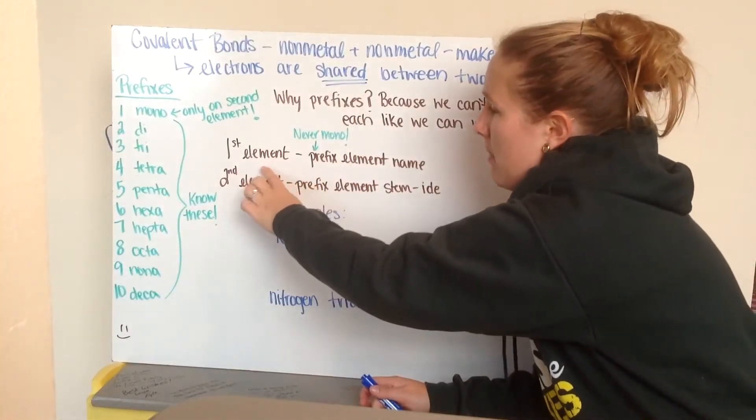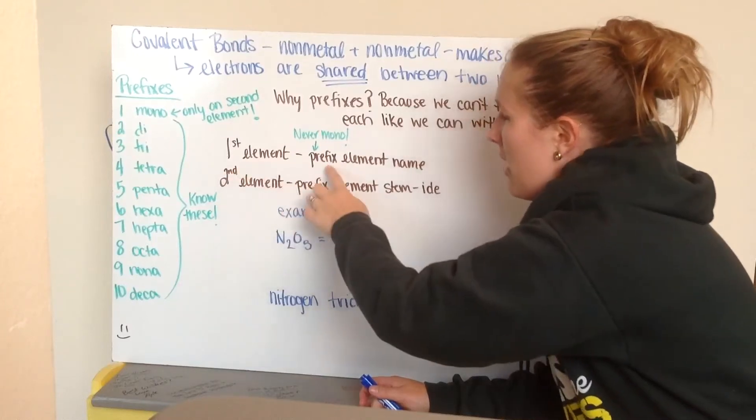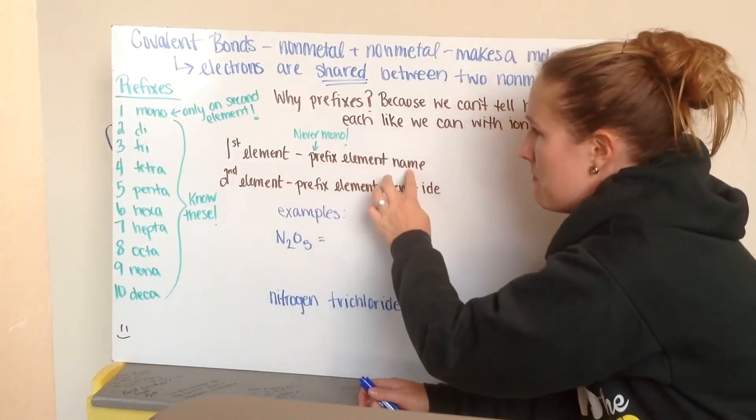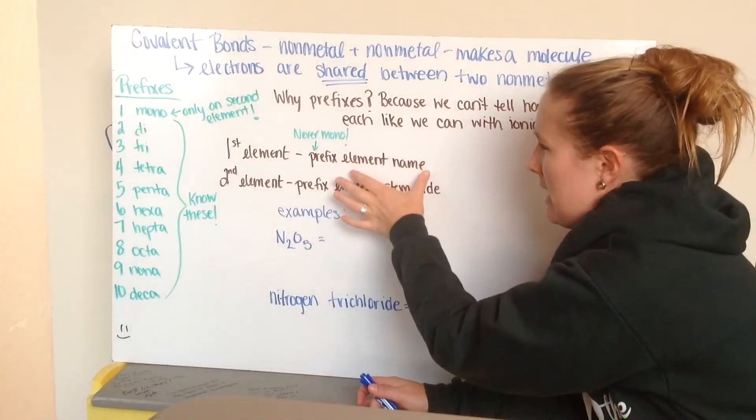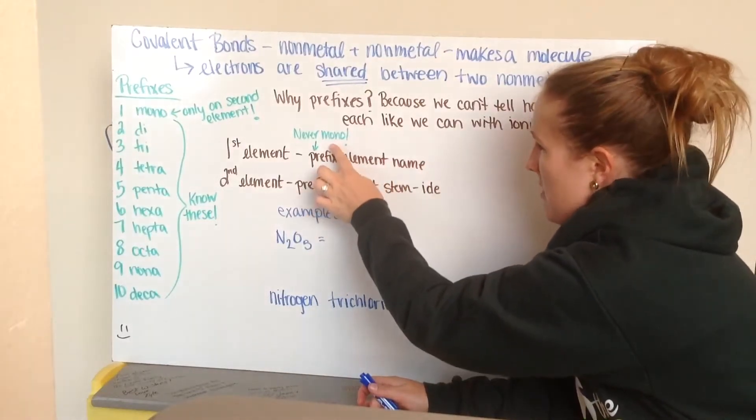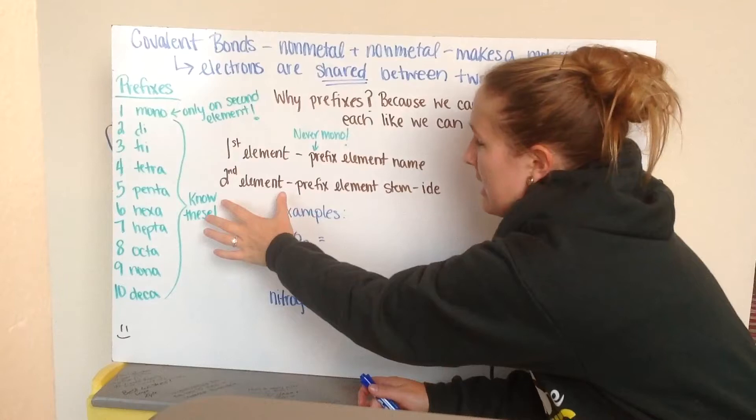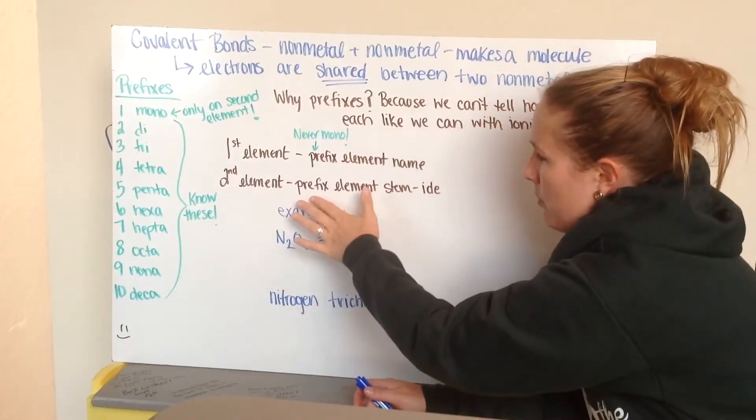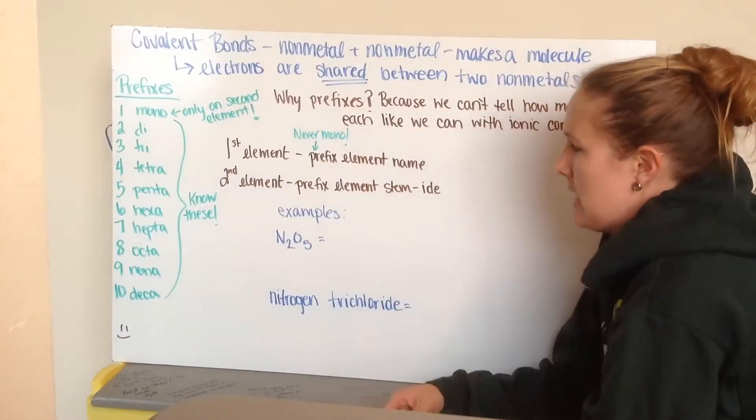So, when we name covalent compounds, our first element is going to have the prefix and then the element name, just like we did with ionic bonds having our element name. But our prefix here cannot be mono. Our second element will have the prefix, the element stem, and then with that ide ending.